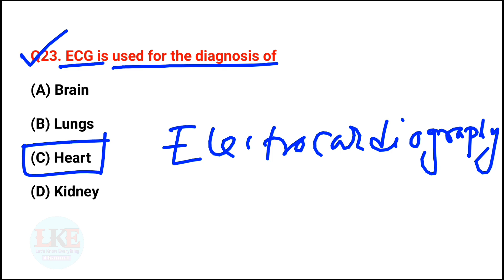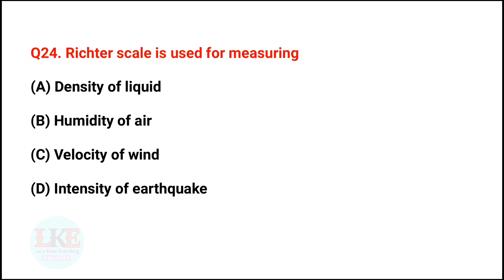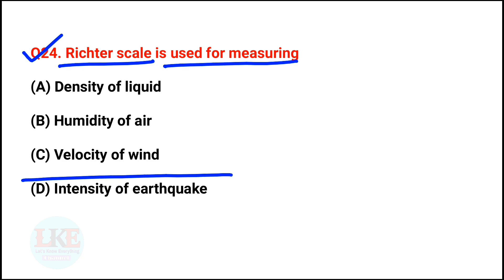By an ECG test, we can easily know the condition of our heart — such as chest pain, palpitations, dizziness, and shortness of breath. Question number 24: the Richter scale is used for measuring the intensity of earthquakes.